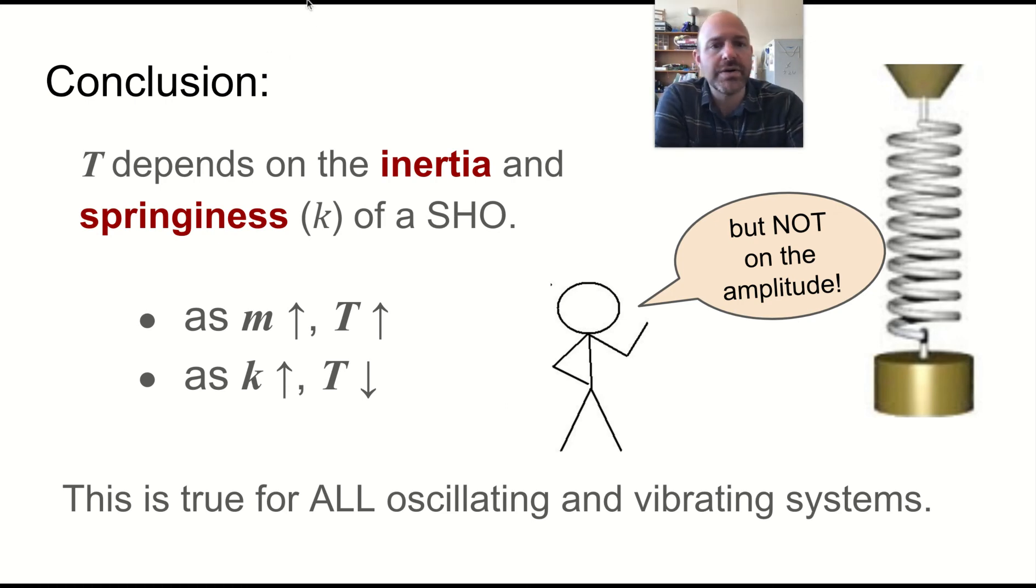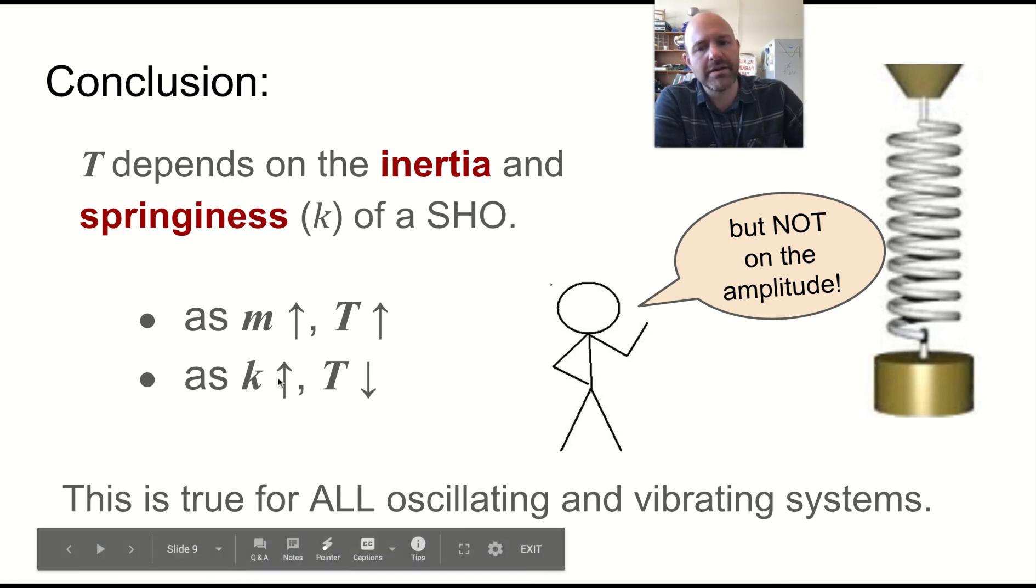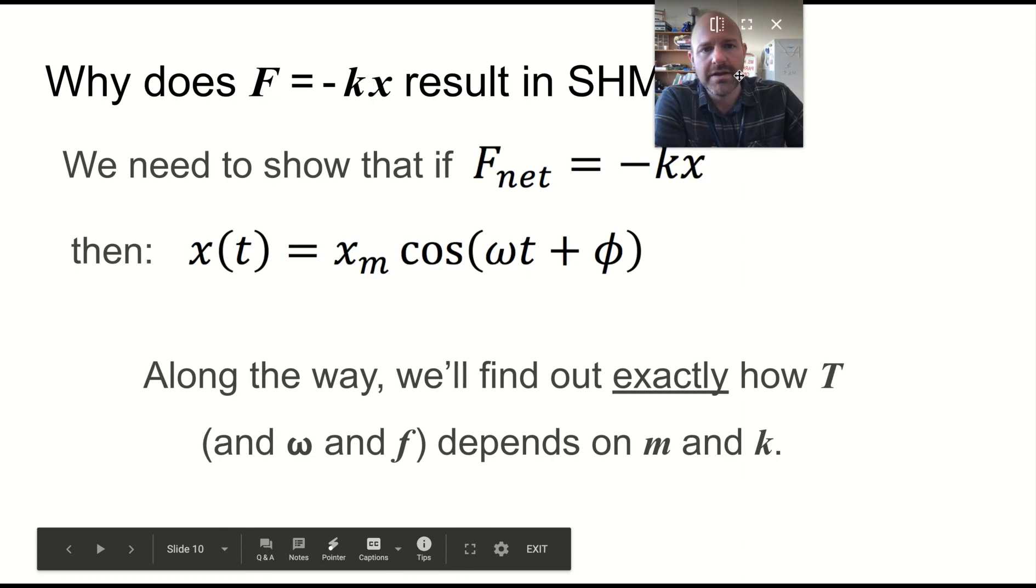On the other hand, as you increase the spring constant K, you are stiffening the spring, making the restoring force bigger for a given displacement. So you're making it accelerate faster. And this is actually true for all oscillating and vibrating systems, even if they are not springs. We just have to think a little bit more carefully about what K means in those cases.